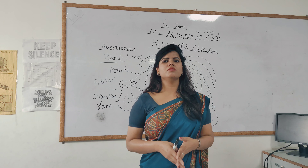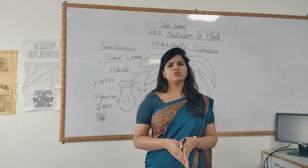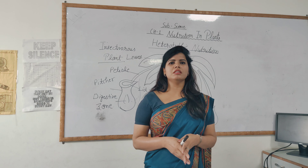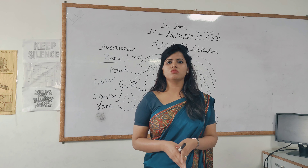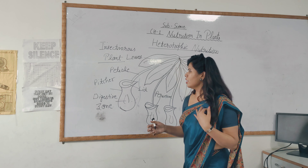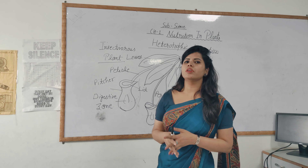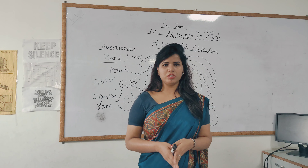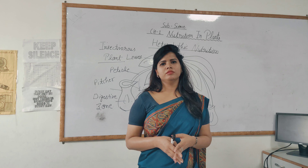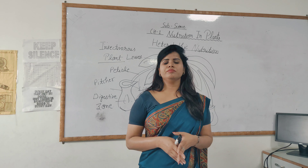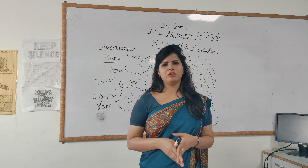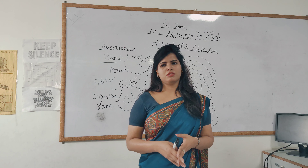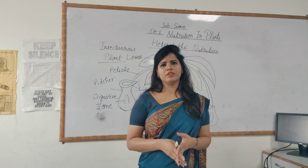So it is all about insectivorous plants, which absorb nitrogenous products from insects as they are found in nitrogen-deficient soil. Here we have discussed all the four types of heterotrophic nutrition: Parasitic Nutrition, Saprophytic Nutrition, Symbiotic Nutrition, and Insectivorous Plants. Here is the ending of the chapter. Tomorrow we will discuss another chapter. Till then, goodbye students, have a nice day.